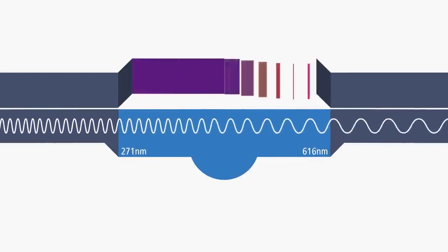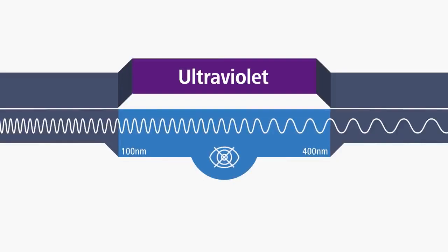But there are also invisible components, like ultraviolet radiation. It has wavelengths from 100 to 400 nanometers and is classified into three categories.